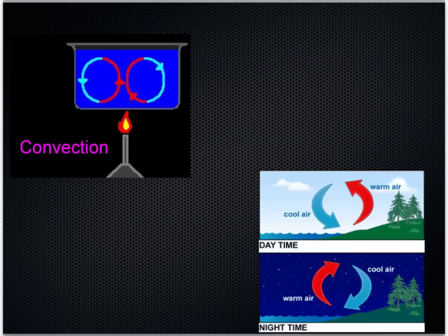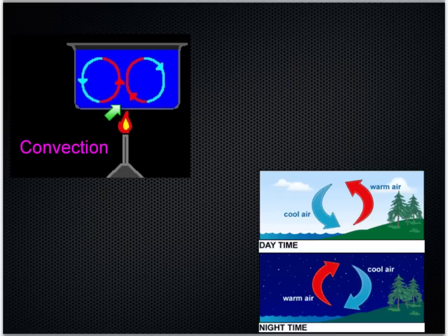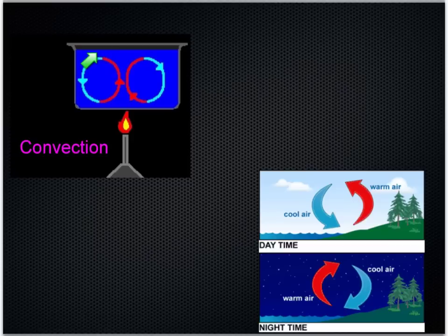This diagram shows what happens when a Bunsen flame is placed in the middle of a beaker of water. The area directly above the flame will become heated first, hence less dense, and so rising of those molecules will occur. As they rise they cool, and other heated molecules push them to the side. As they cool, they are allowed to come back down again, and so a cycle is created. This is called a convection current.